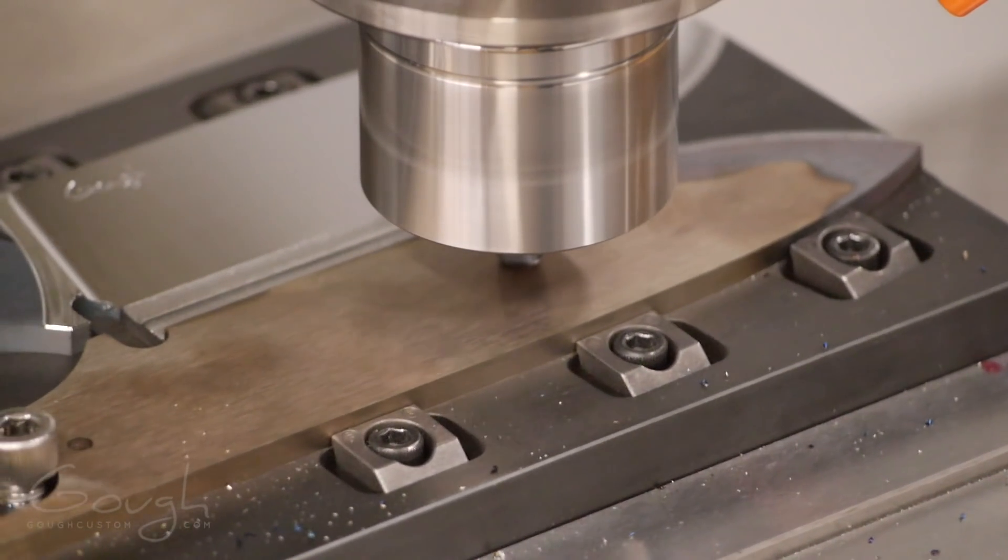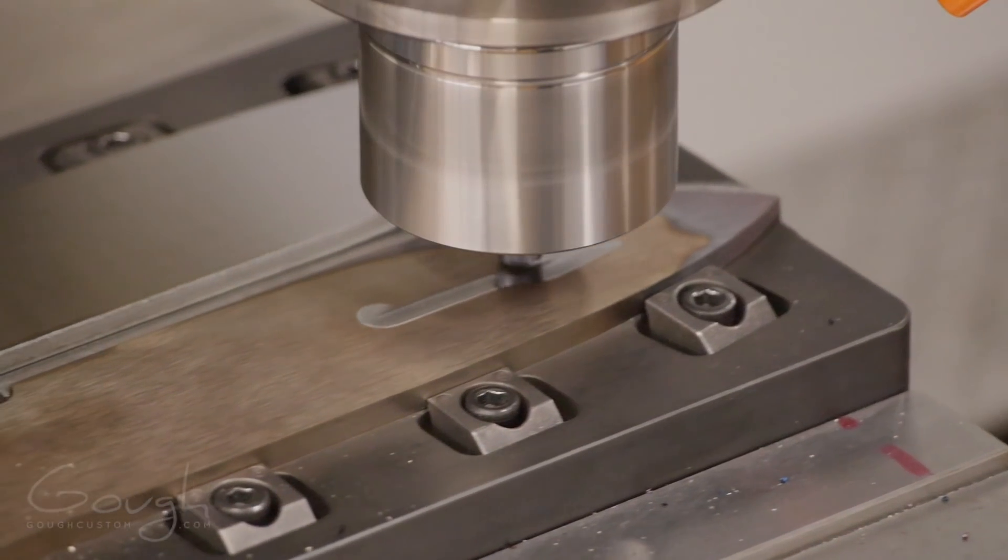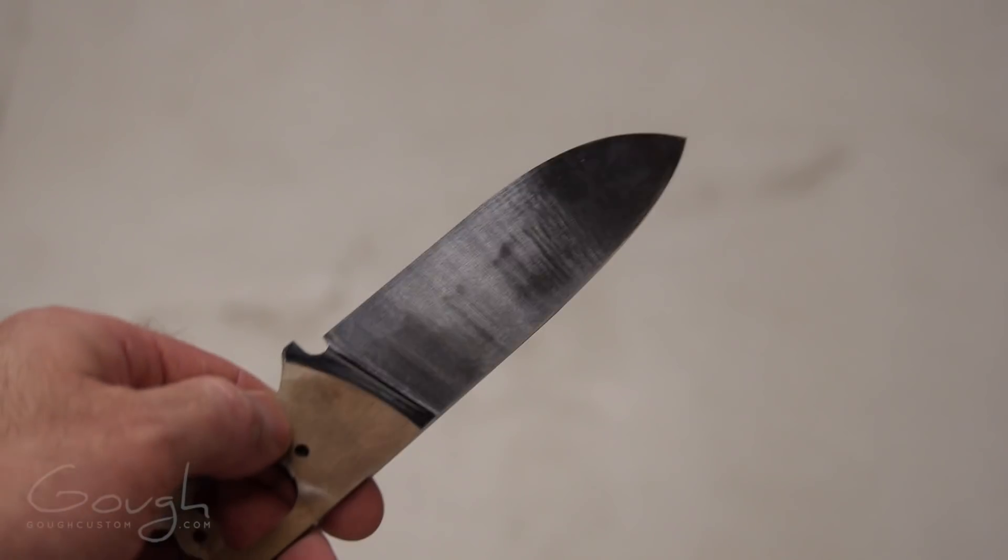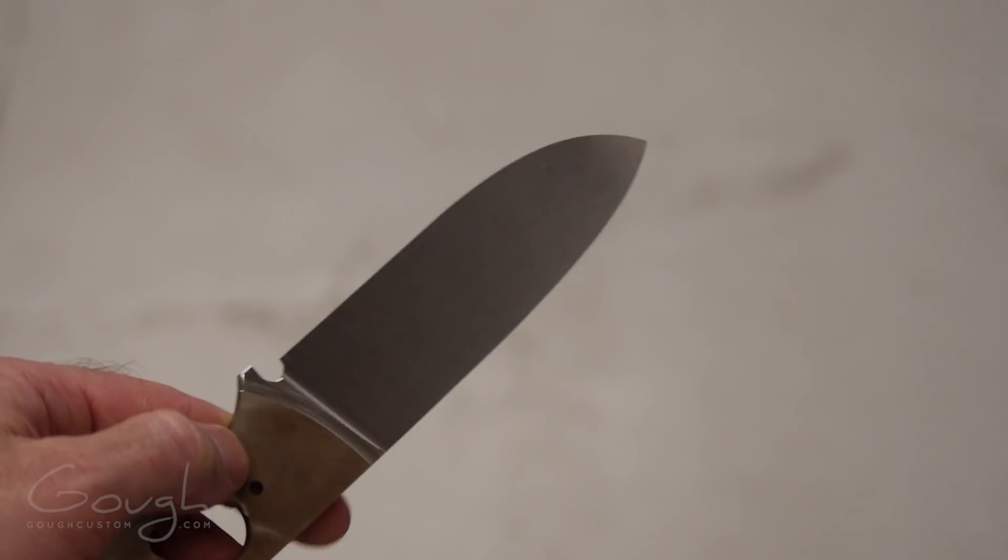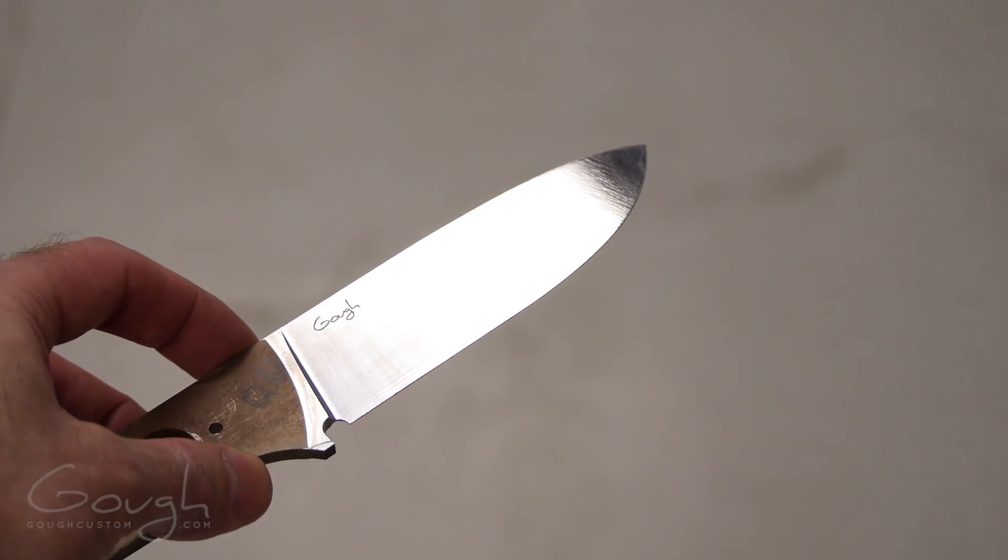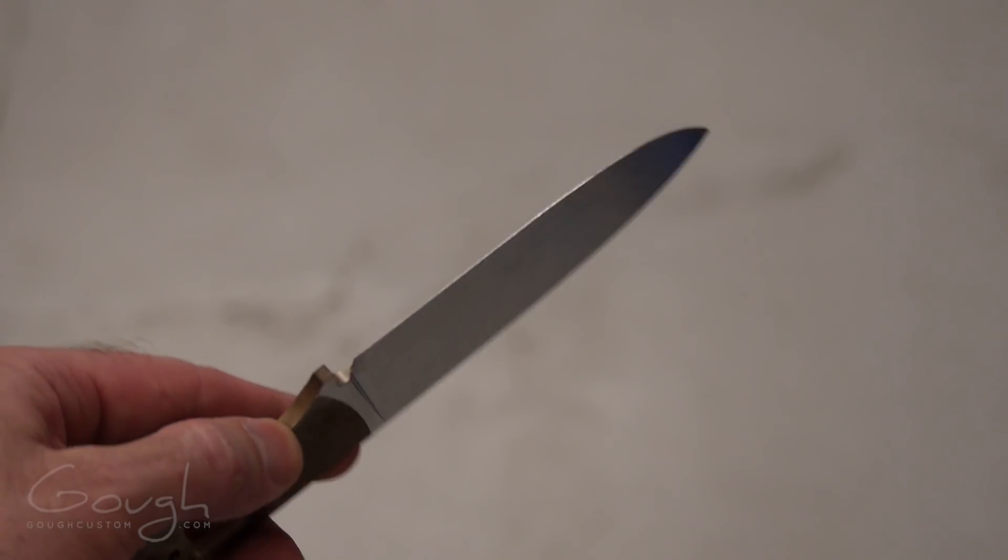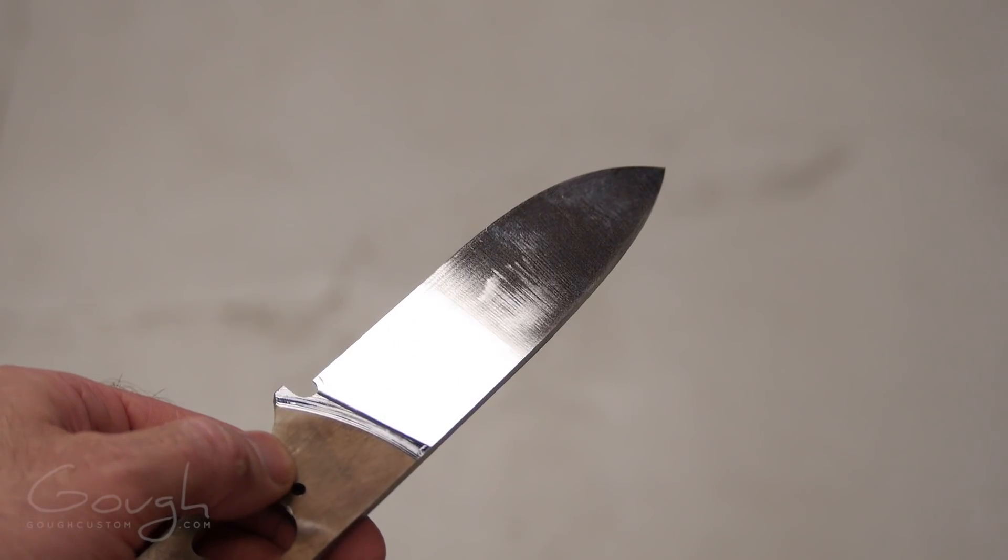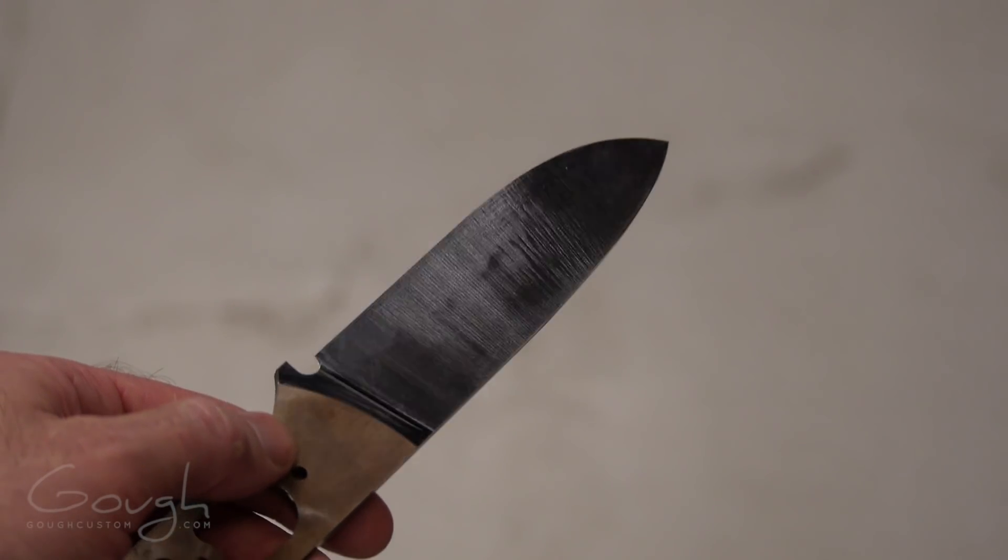The machining process then starts over again with the blade on the other side of the fixture. Here you can see the final result ready for me to start hand finishing. It's not perfect but it's really really good especially considering that my CNC machines are more than 25 years old. Clearly I'm very pleased with it at least.